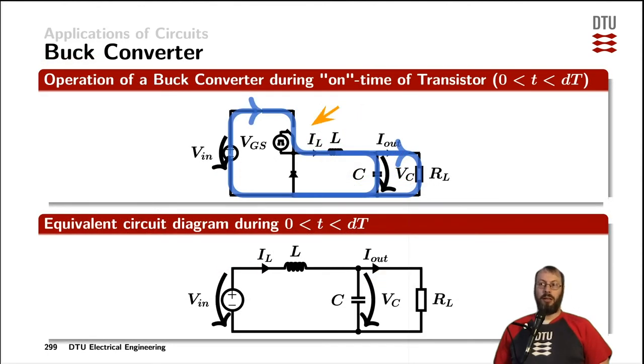Now during the on time of the switch, that is between zero and the duty cycle times the period time T, the power transistor is ideally a short, has no voltage across it, and conducts the full inductor current which provides current to the output capacitor and supplies the load with the required DC current. And the return path closes the loop through the input voltage source.